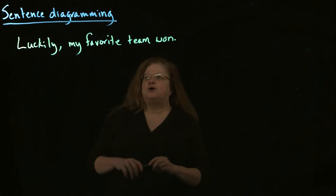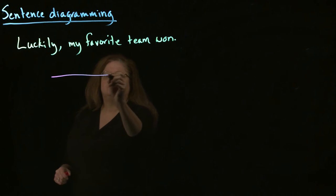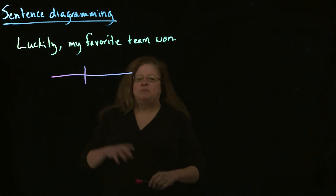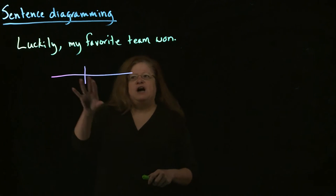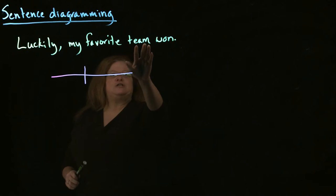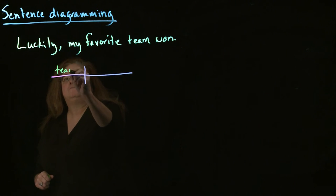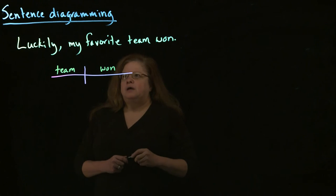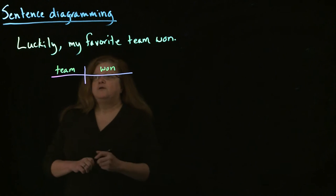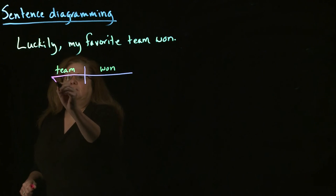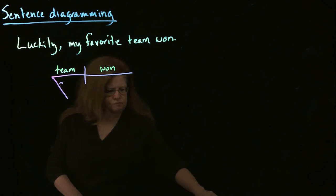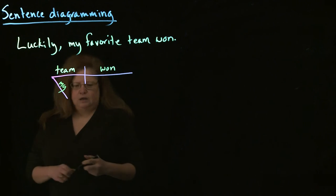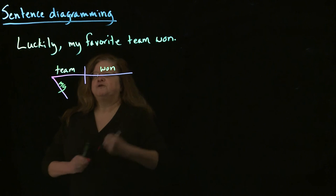So we want to look once again at our basic structure. And probably by now you're getting used to finding our subject and verb. Our subject in this case is actually team, and our verb is won. Very simple. And we also know that we have the modifier my and the modifier favorite.